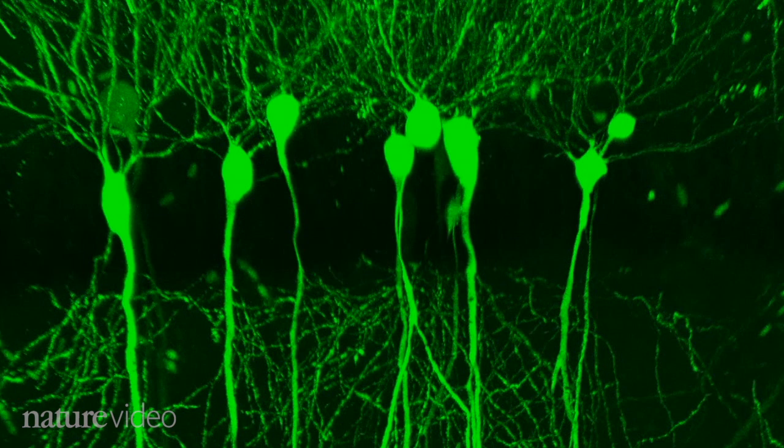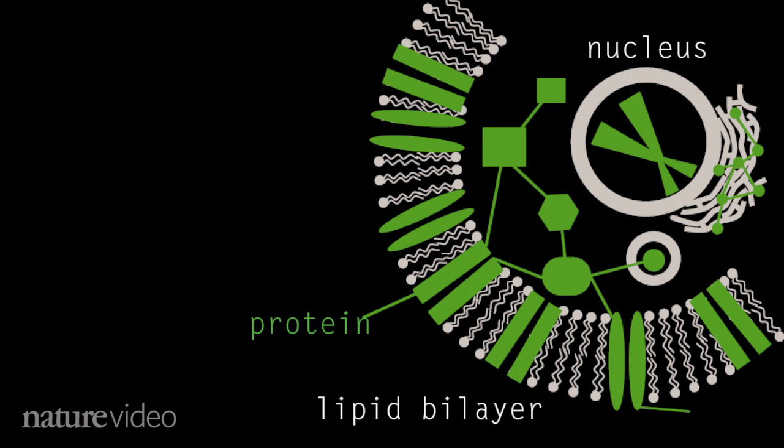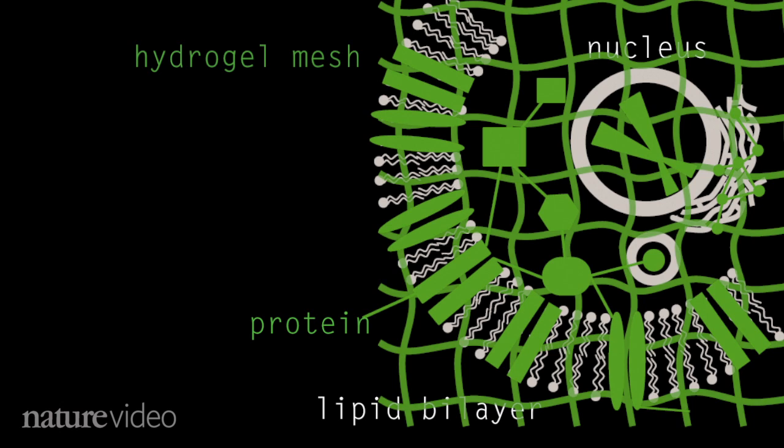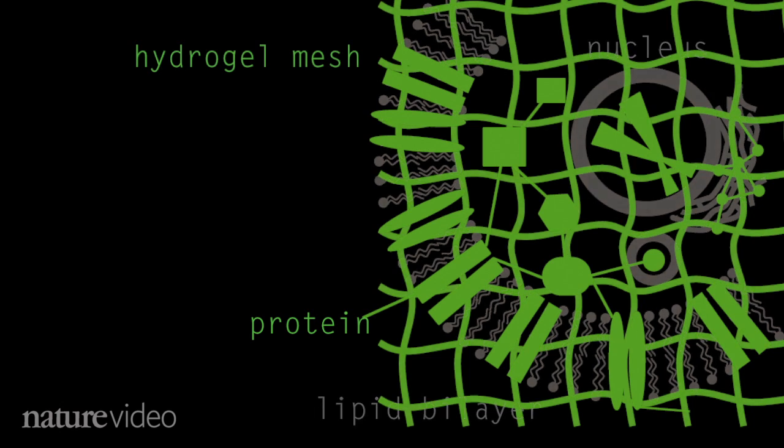So how do you make a brain transparent? The thing that obscures the view is fat. Lipid layers surround each cell. To remove them without disrupting the cell structure, the team used a hydrogel to create a mesh to hold the rest of the components in place. Then they could clear away the fat.